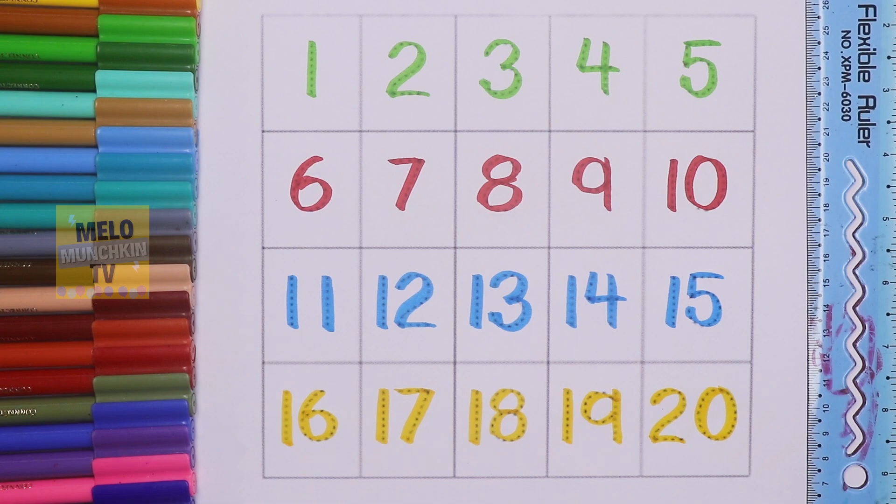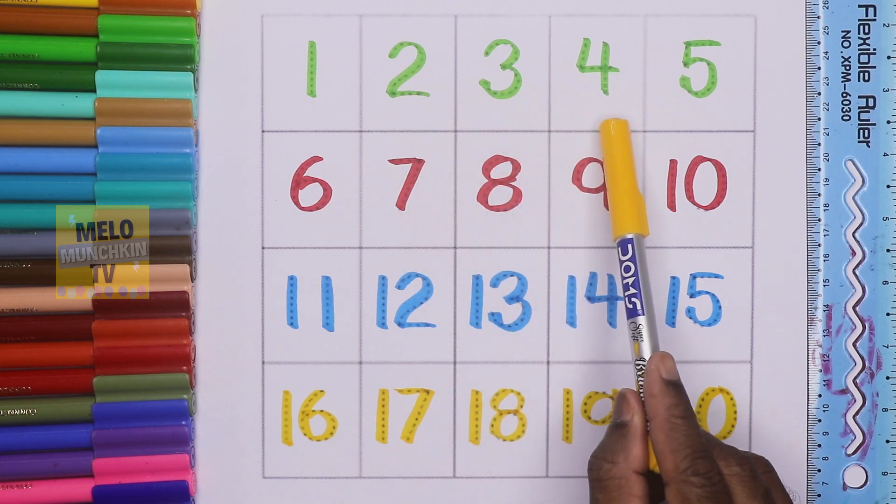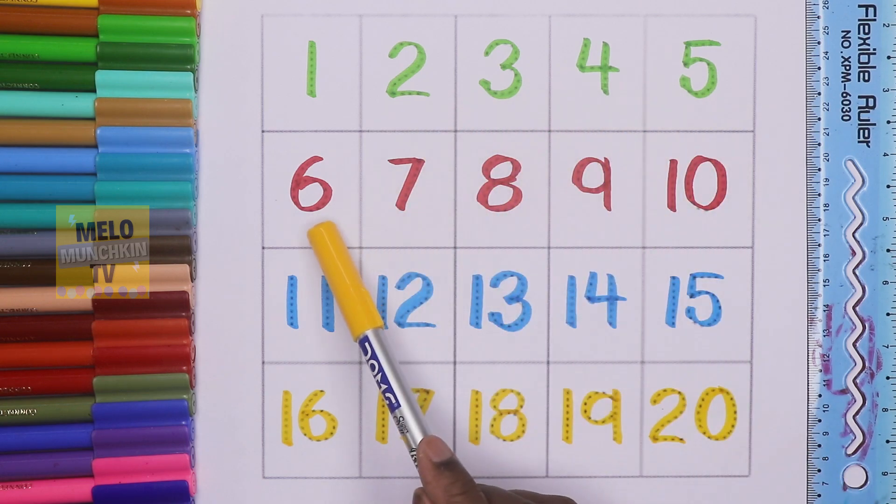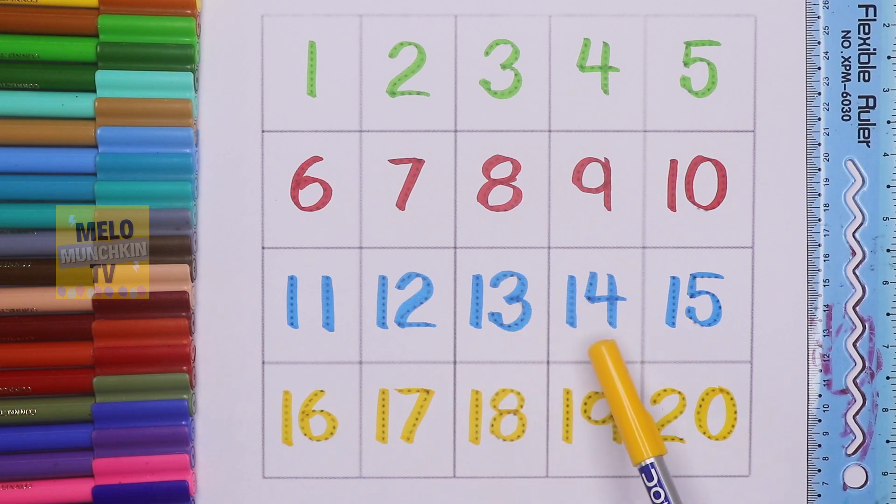So let's count once again: 1, 2, 3, 4, 5, 6, 7, 8, 9, 10, 11, 12, 13, 14, 15, 16, 17, 18, 19, and 20. So that's it for today kids, see you in my next video. Till then, take care and bye.